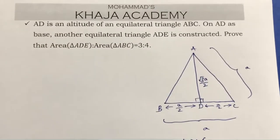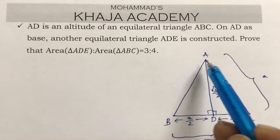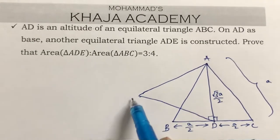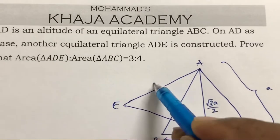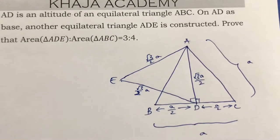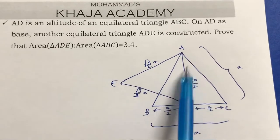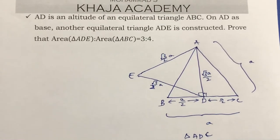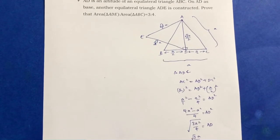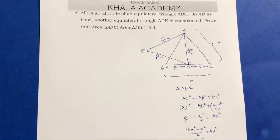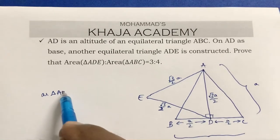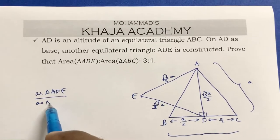Now, on AD as a base, another equilateral triangle ADE is constructed. ADE is an equilateral triangle and ABC is an equilateral triangle. Equilateral triangles are always similar. So we need to find the ratio of area of triangle ADE to area of triangle ABC.